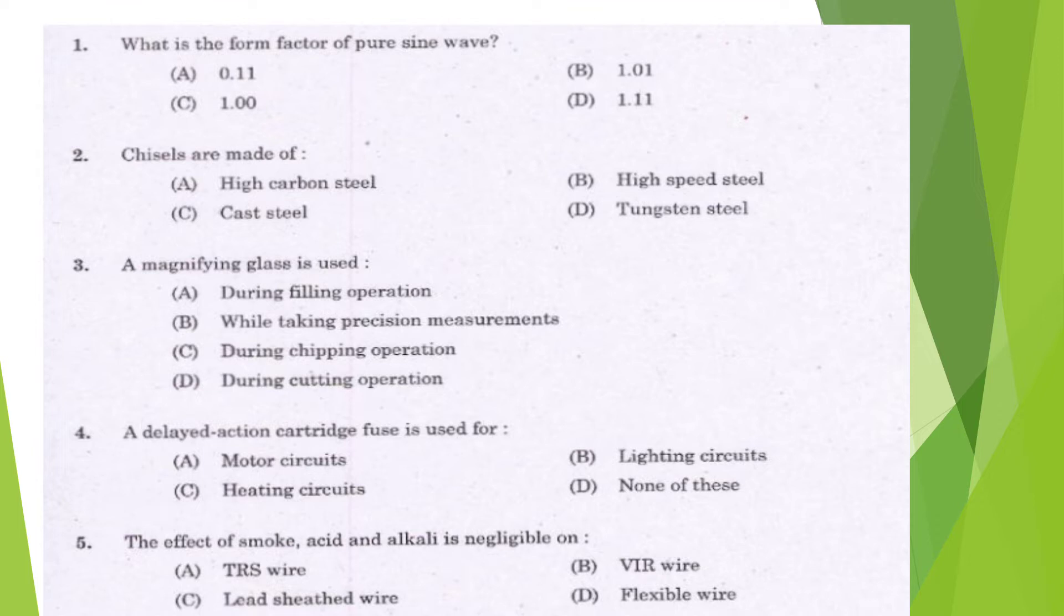First question: What is the form factor of pure sine wave? The form factor is 1.11, option D. Second question: Chisels are made of high carbon steel, high speed steel, cast steel, or tungsten steel? Chisels are made of high carbon steel.